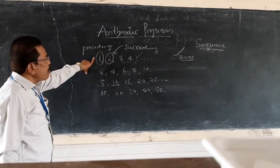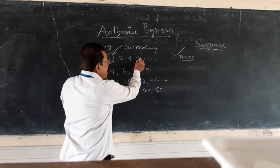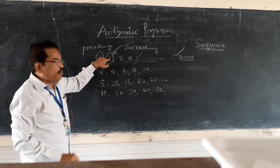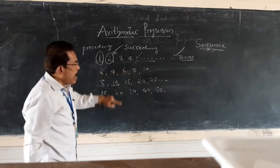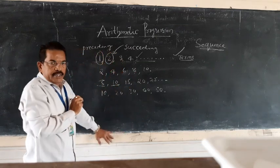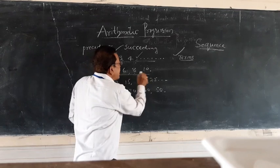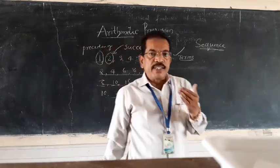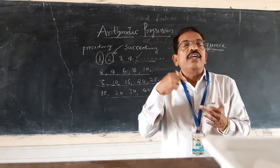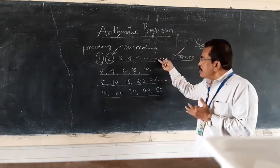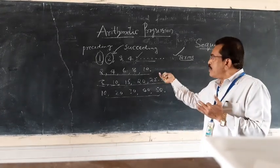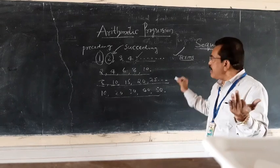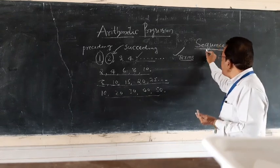A sequence can be classified based on the number of terms. Where I have shown a continuation sign, that is an infinite sequence. Where I have given a full stop, such as 2, 4, 6, 8, 10, that is a finite sequence. So a sequence is classified into two types: a finite sequence has a limited number of terms, and an infinite sequence has an unlimited number of terms.